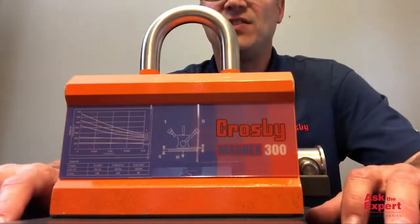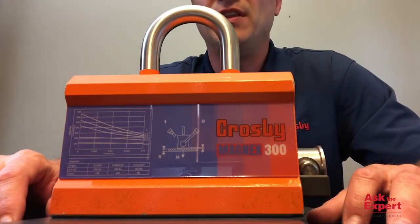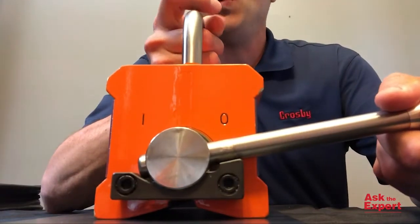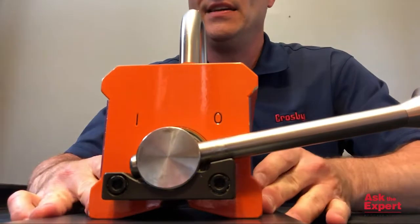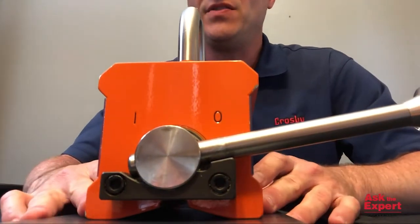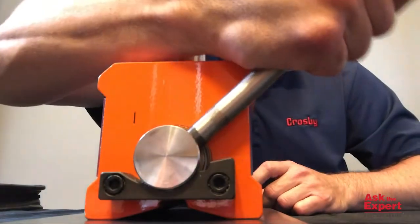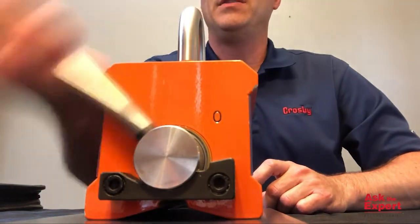I'd like to show you the design now of that handle so you can see how it works. This is the Crosby Magnex 300 lifting magnet, and it features this easy switch stop block design. Now I have the magnet sitting on a piece of steel, so it's easy for me then with one hand to turn it from off to on.